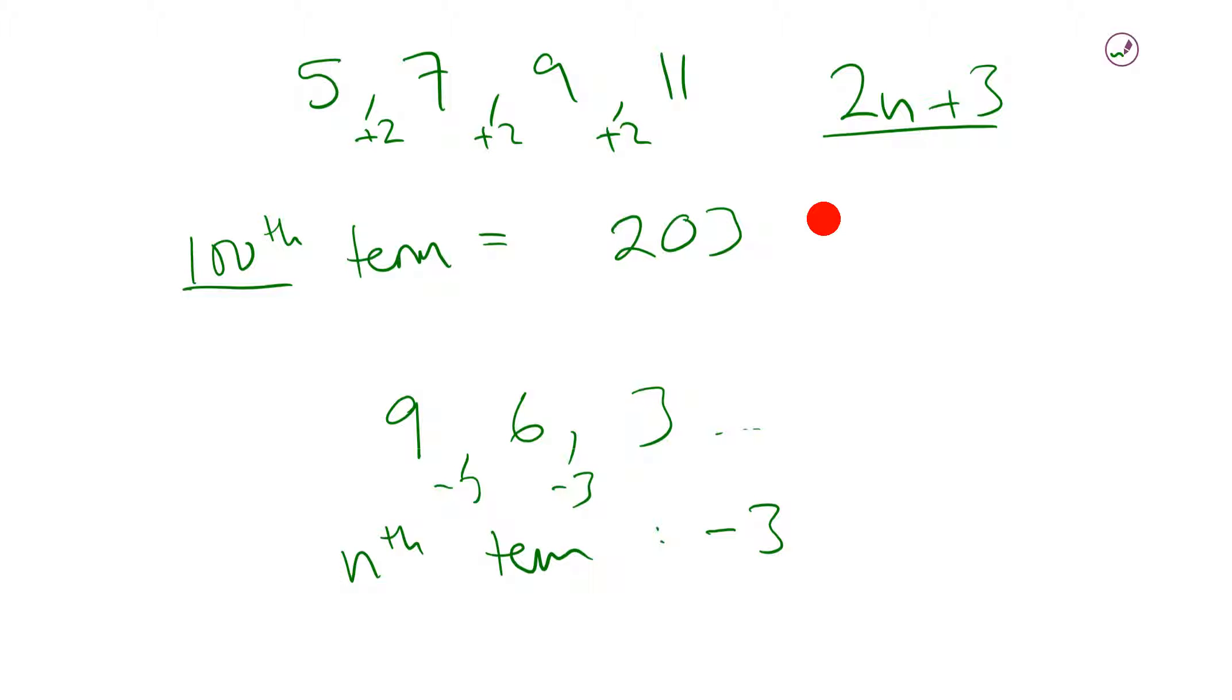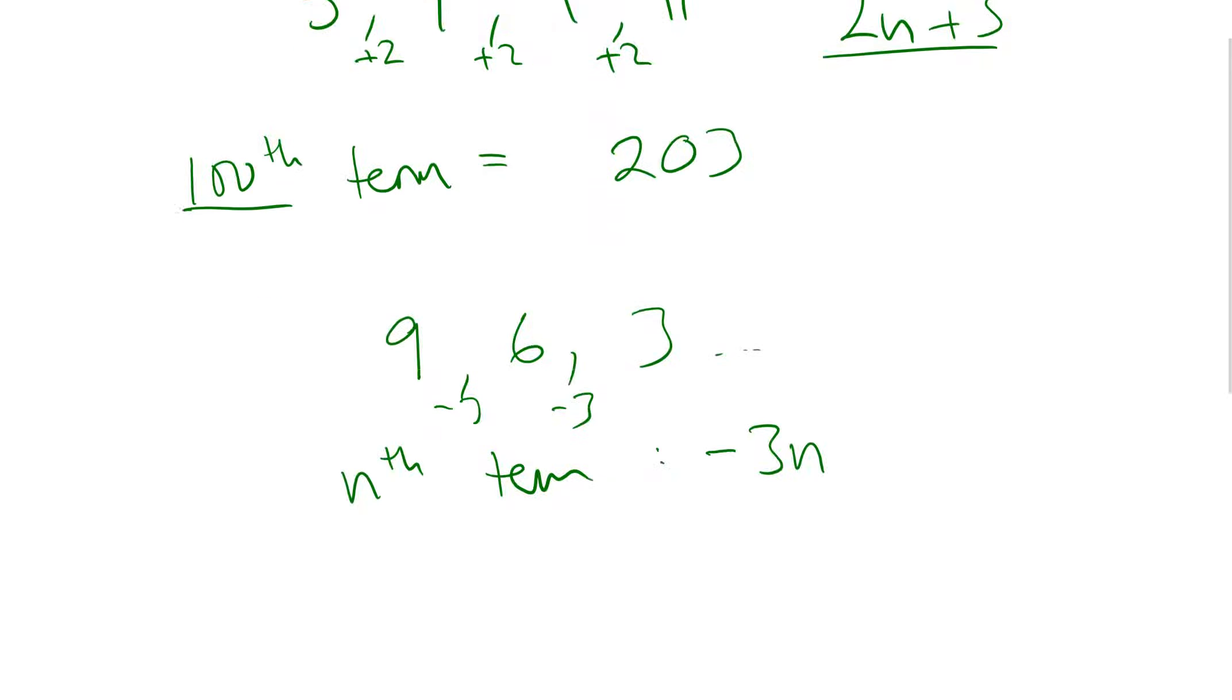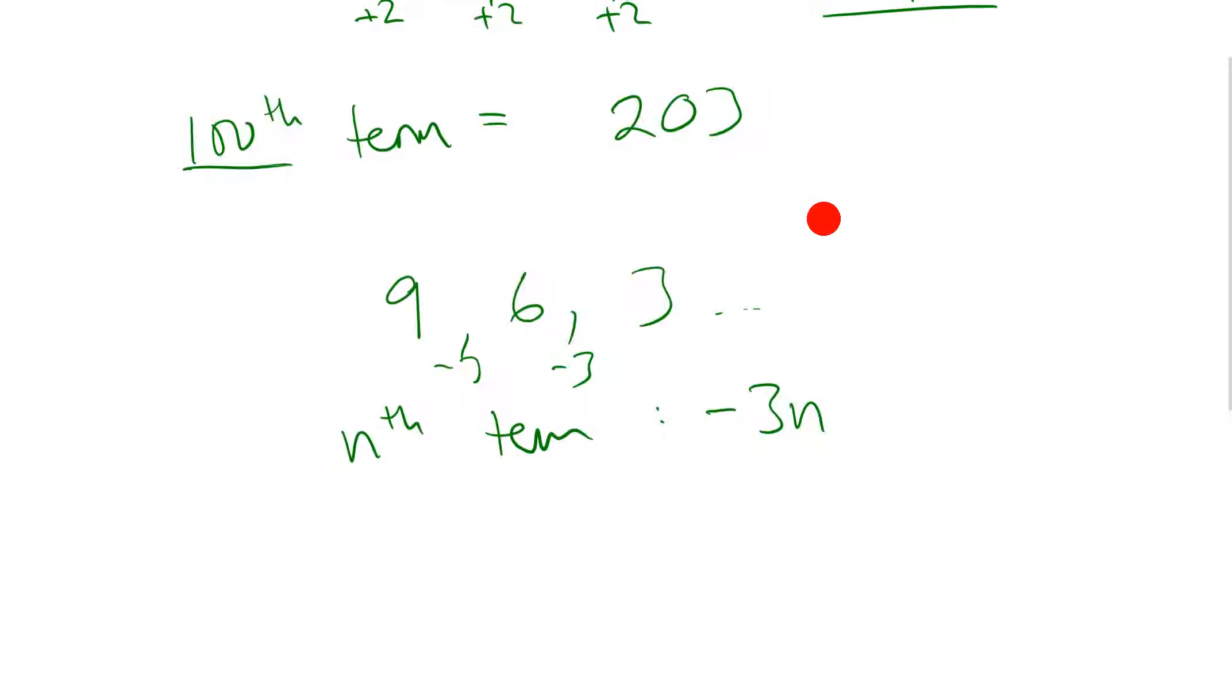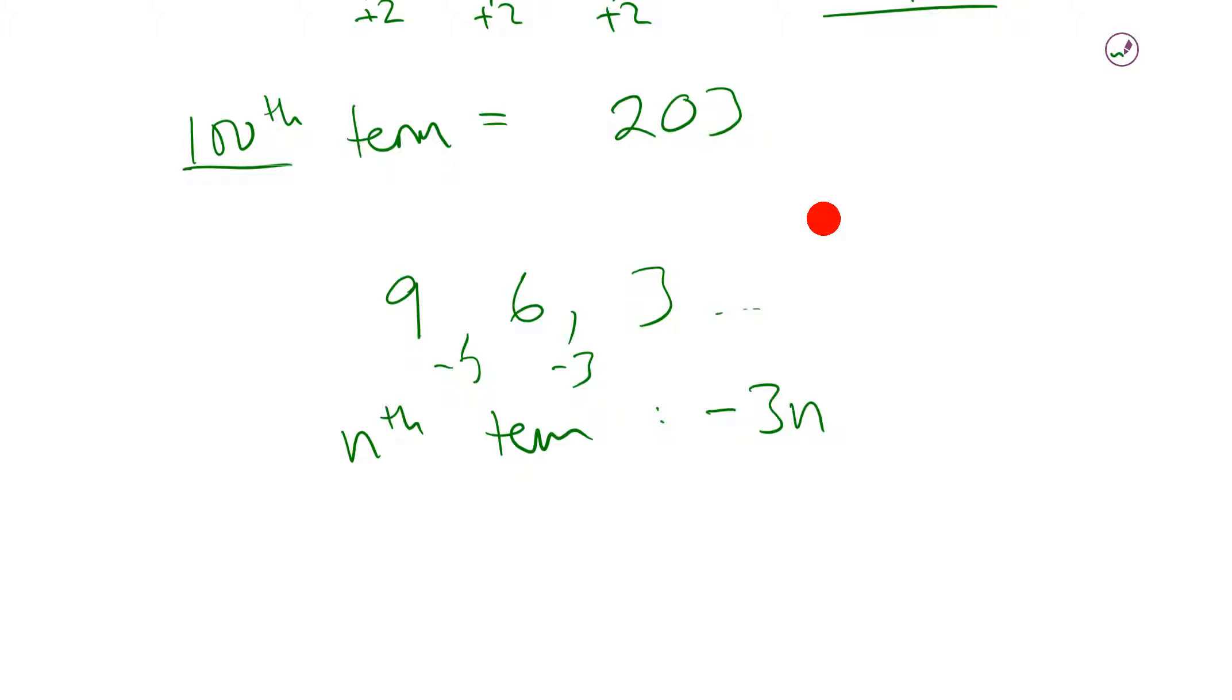We know it's going minus three, so that tells you it's minus three N to start off with, right? Okay, now minus three N means the minus three times table, which starts with minus three, then it goes to minus six, then it goes to minus nine.